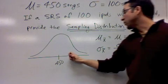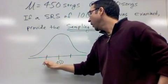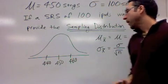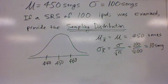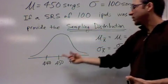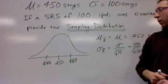So what we can do now, since we know the standard deviation, is we can mark up the normal curve. And what do we know? We know that because it's a normal curve, approximately 68% of all collections of 100 iPods will have averages between 440 and 460.